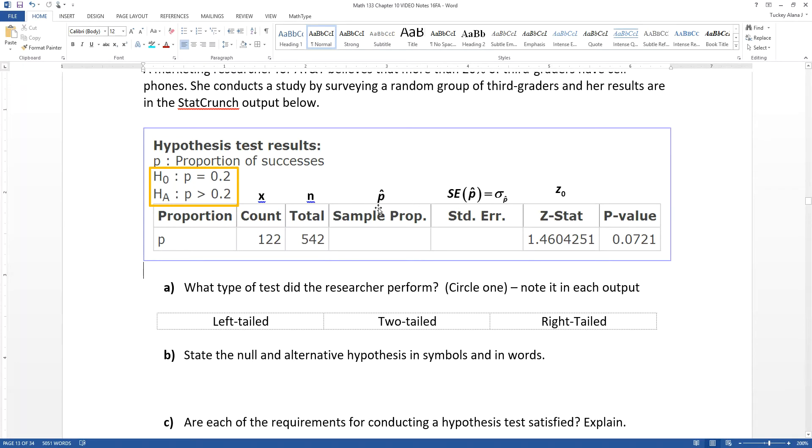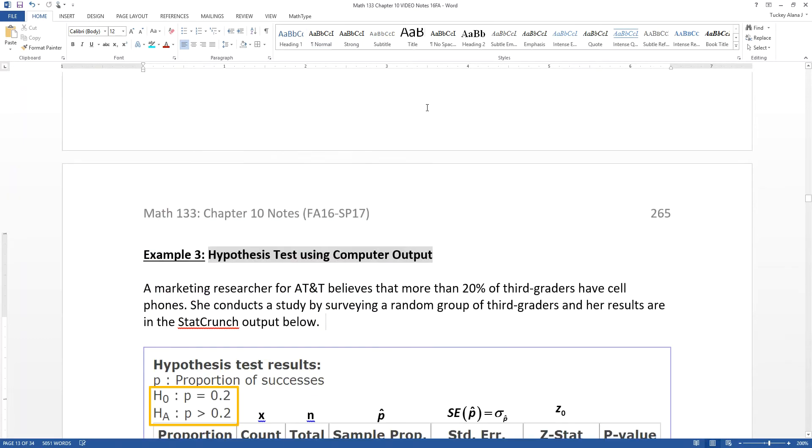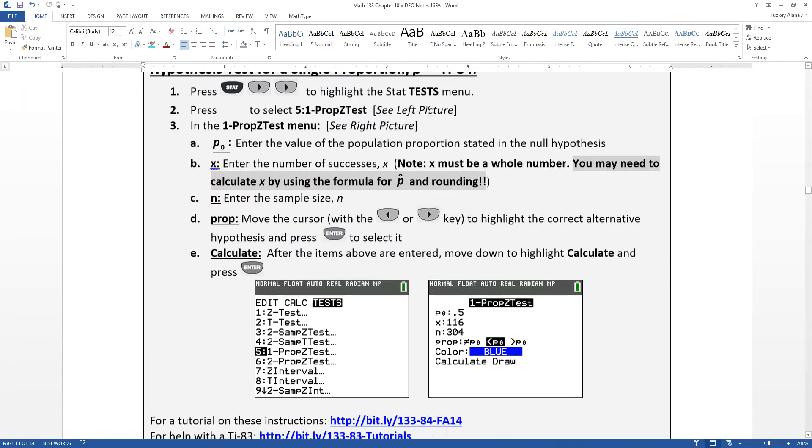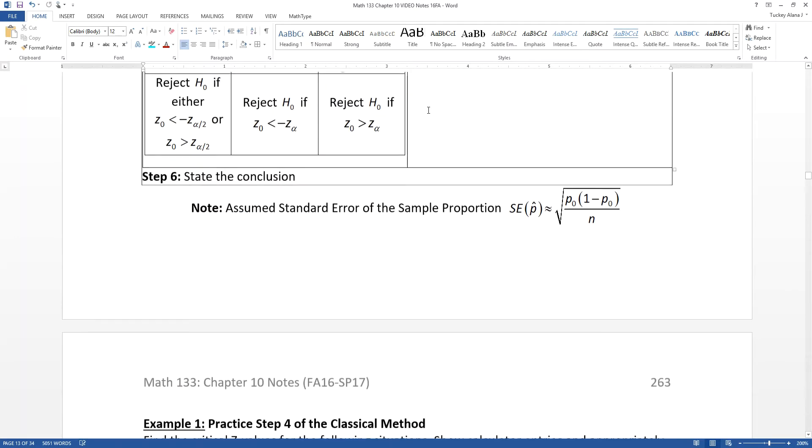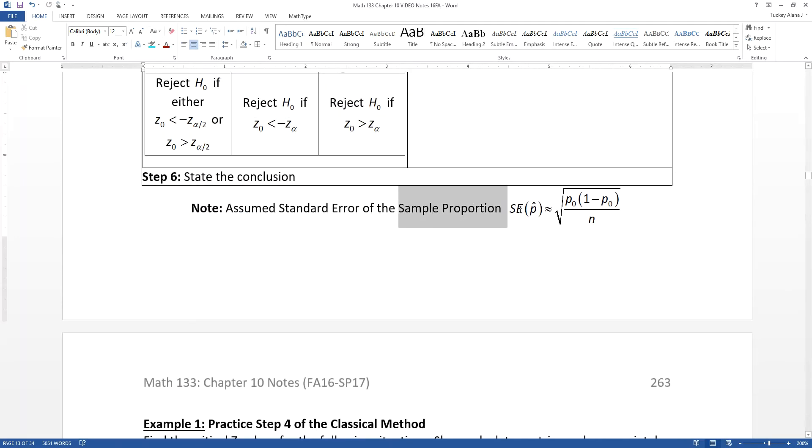P-hat is your sample proportion. The standard error of your P-hat, we have a formula for it back a page or so. We learned that we have to use this formula right here for the standard error of the proportions. I'm going to highlight that for later use.